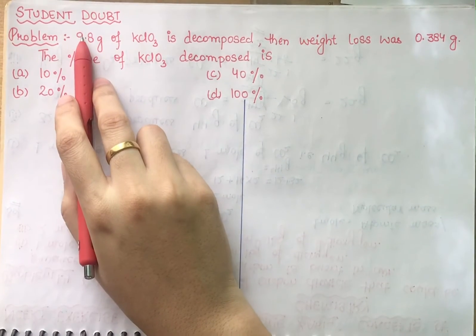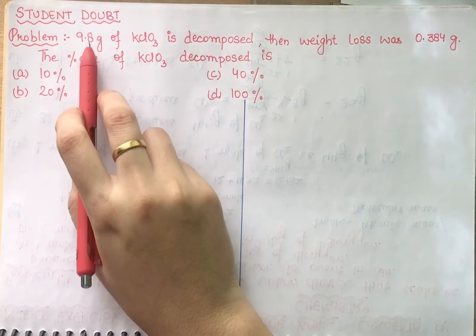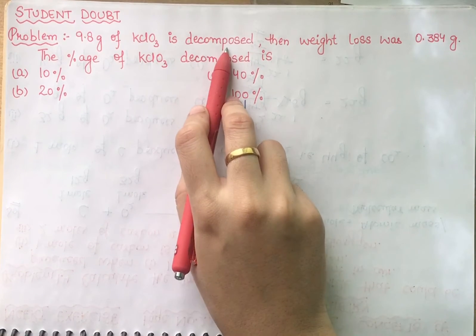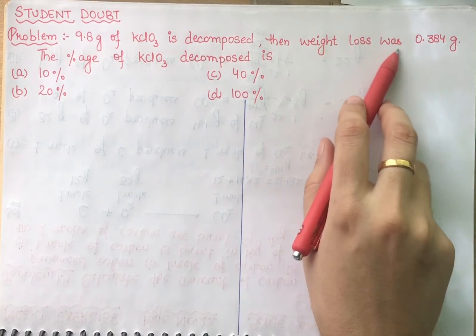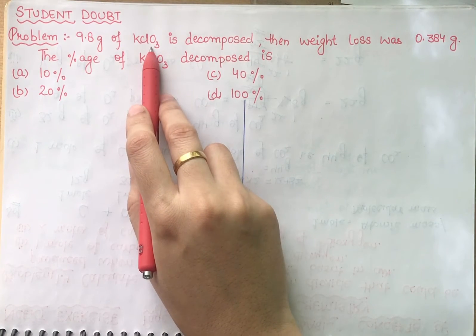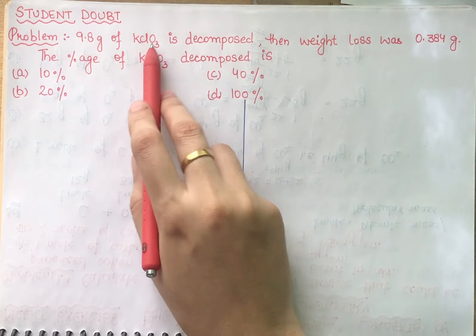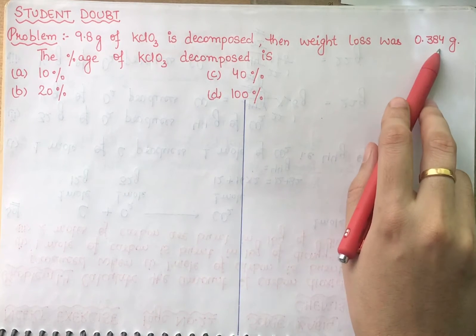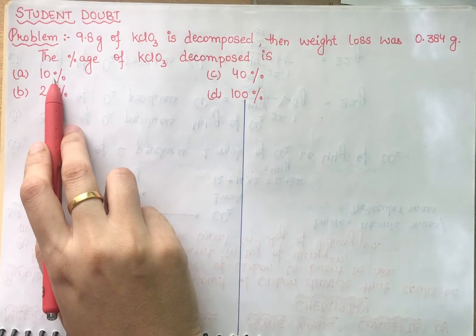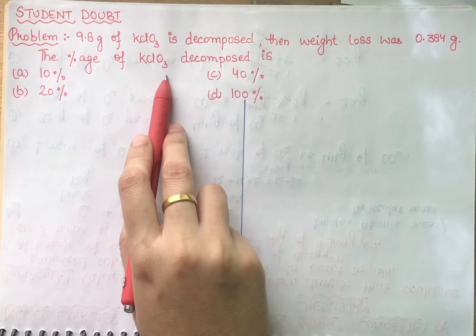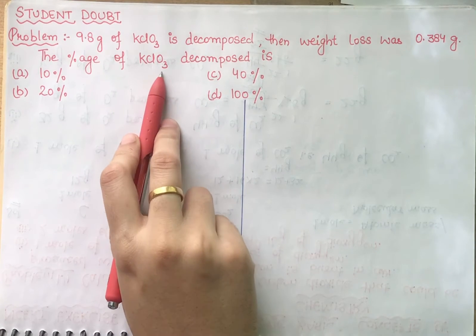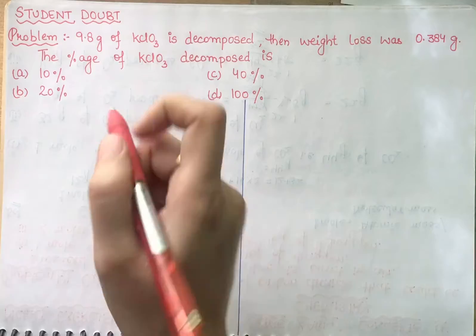Students, we have a student doubt here. The problem states: 9.8 grams of KClO3 is decomposed, then weight loss was 0.384 grams. So the amount of KClO3 decomposed and the weight observed is 0.384 grams. You need to tell what percentage of KClO3 is decomposed.